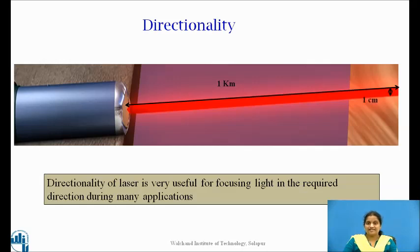The laser on the other hand has the ability to focus the same amount of light into a diameter of just 1 centimeter as shown in the figure. This is the power of directionality of laser beams. It is highly concentrated light and this property of laser, directionality, is very useful for focusing light in the required direction during many applications.